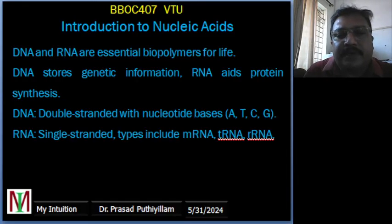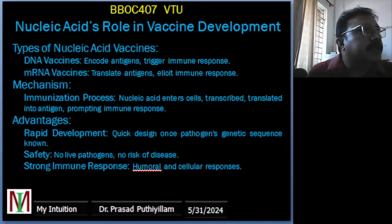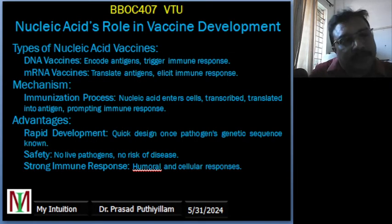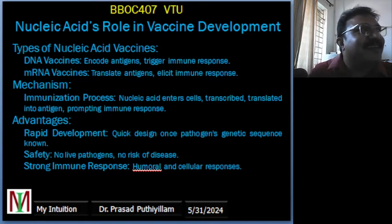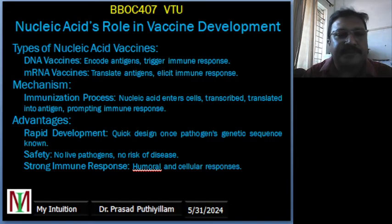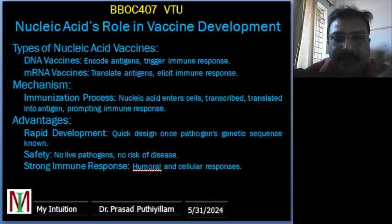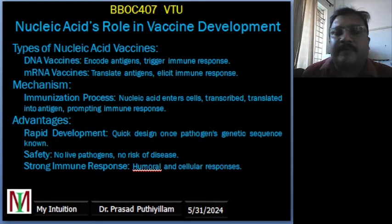The functions of nucleic acid in various applications: DNA stores and transmits genetic information. For example, DNA in chromosomes is passed from parents to offspring carrying hereditary information. RNA plays a key role in translating genetic information into proteins. For instance, messenger RNA directs the synthesis of insulin in the pancreas, demonstrating how genetic information is translated into a functional protein.